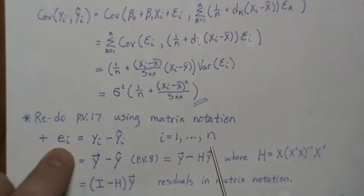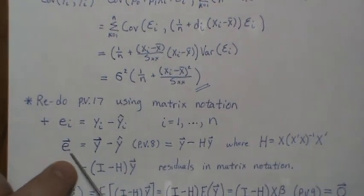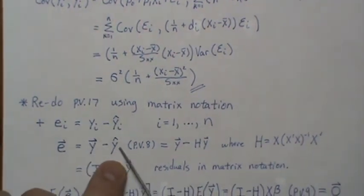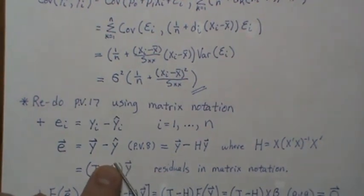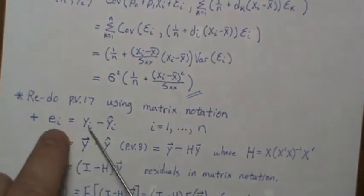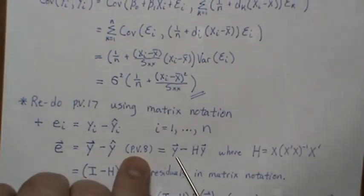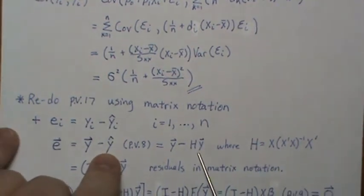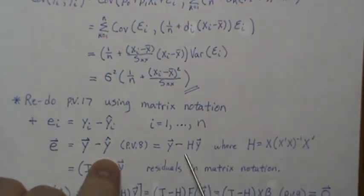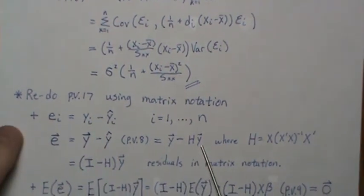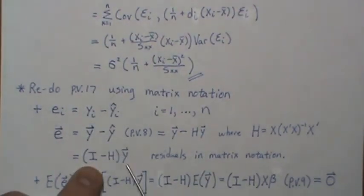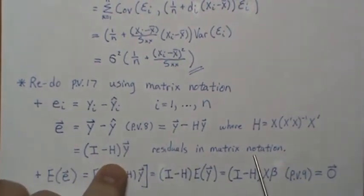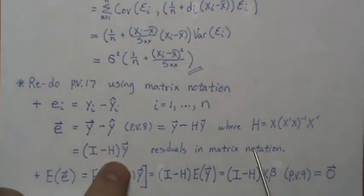The residual vector e = Y − Ŷ, for i = 1 to n. In matrix notation: e = [e₁, e₂, …, eₙ]ᵀ, Y = [Y₁, …, Yₙ]ᵀ, and Ŷ = [Ŷ₁, …, Ŷₙ]ᵀ. From PV8, the fitted values are Ŷ = HY where H is the hat matrix. Since Y is common, we factor to get e = (I − H)Y.